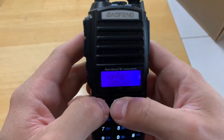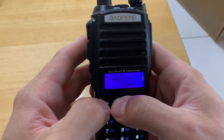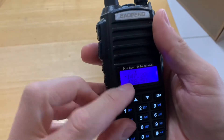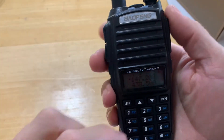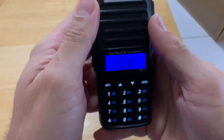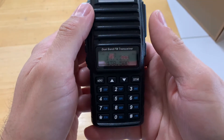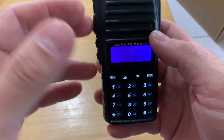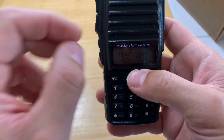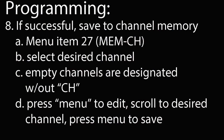As far as programming for repeaters, I don't have to do anything else. I like to test it before saving it to a channel. So I'll exit and hit the top button — Line A. KI7-WJP. KI7-WJP. I've successfully keyed up the repeater. I can hear it and it can hear me — KI7-WJP. So I know it works now.